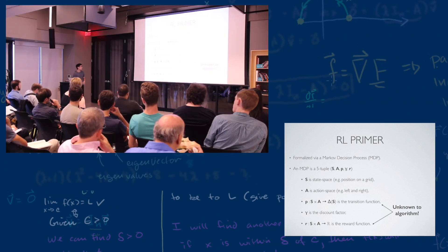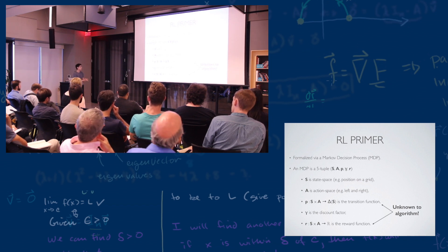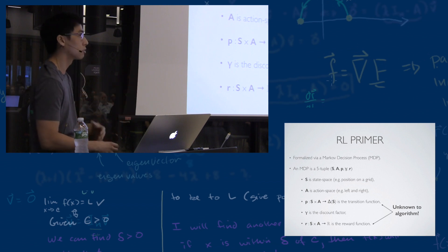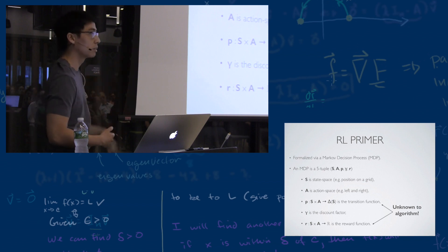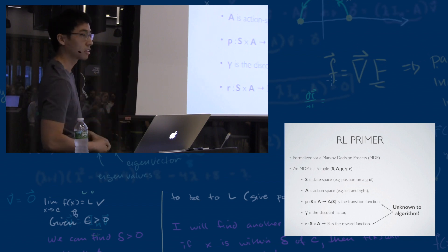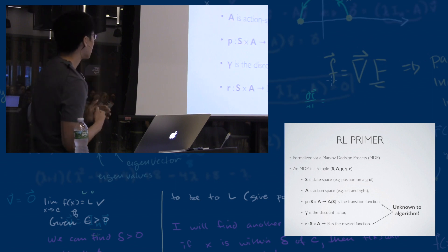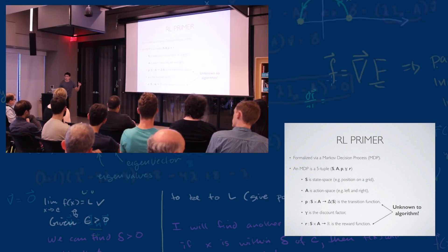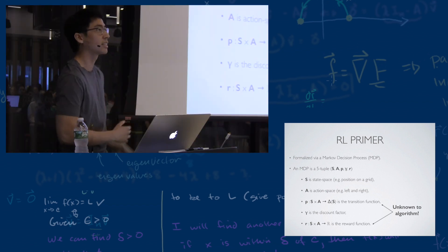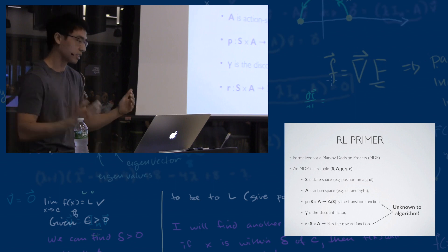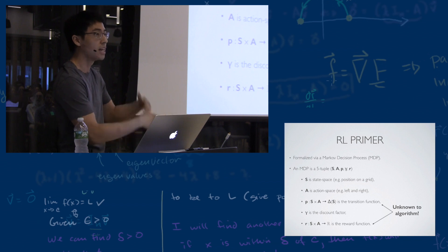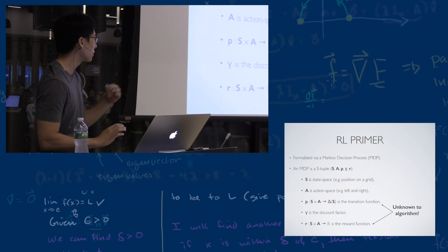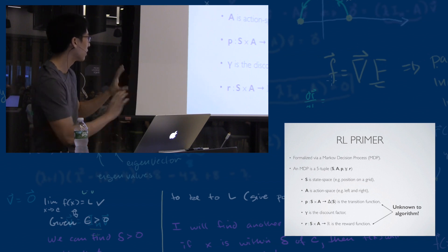The agent interacts with the environment through a transition function: given the current state and action, it receives a probability distribution over the next states. The probability distribution allows nature to be random rather than deterministic, though you can encode determinism with a Dirac mass. There's also a reward function which, given a state and action, describes how good that pair was. The key distinction from classical control theory is that the transition and reward functions are unknown to the algorithm — RL optimizes rewards without knowing the dynamics explicitly.